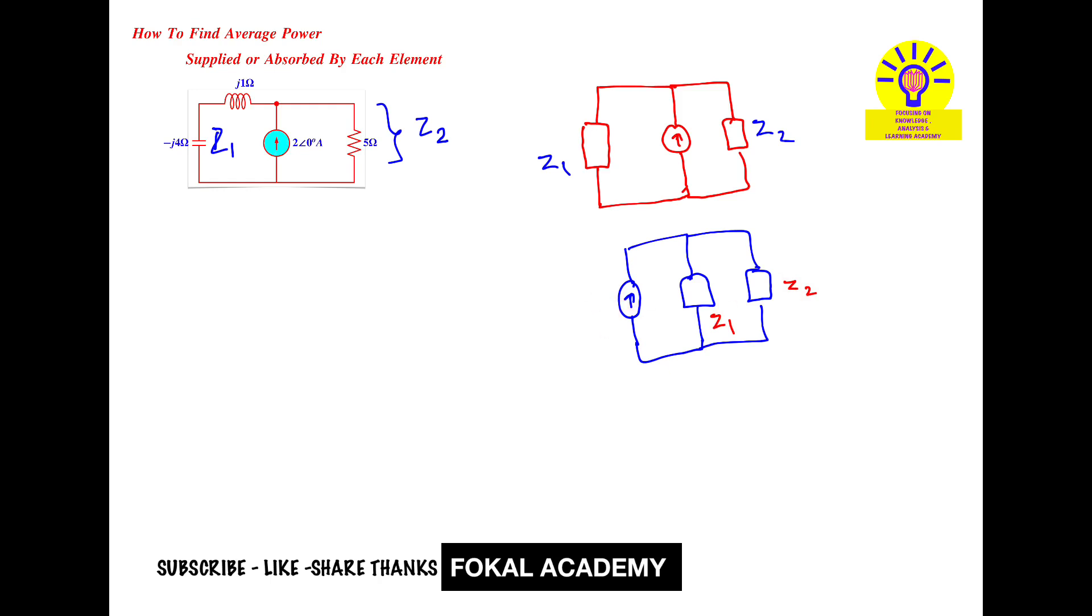Now finally Z1 and Z2 are parallel to the current source. Let's consider in this branch there is current I1 passing, and in this branch there is current I2 passing. According to average power rules for reactive components, the inductor and capacitor average power is zero.